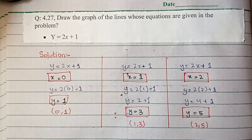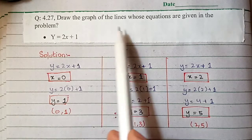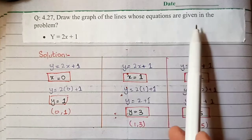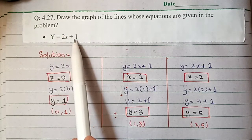Assalamu alaikum, welcome back to Learning Point. Today I am going to practice business mathematics for 11th commerce, chapter 4, which is functions and their graphs. Let's start. Question number 4.27: Draw the graph of the lines whose equation are given in the problem. The equation given is Y = 2x + 1.